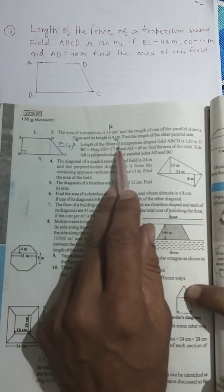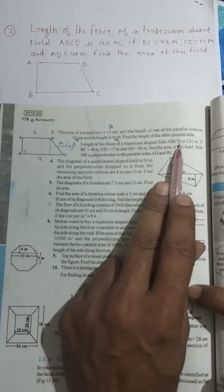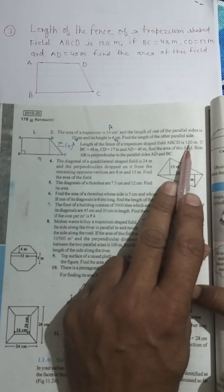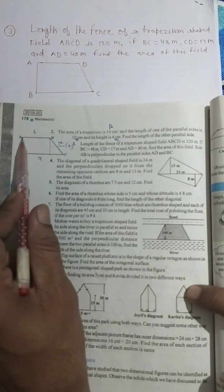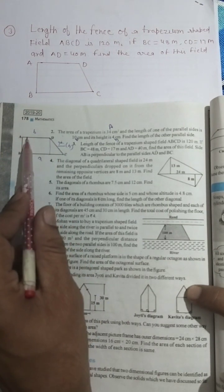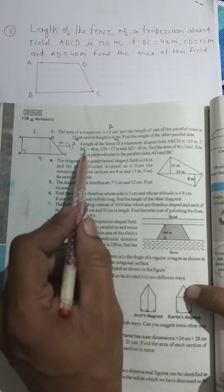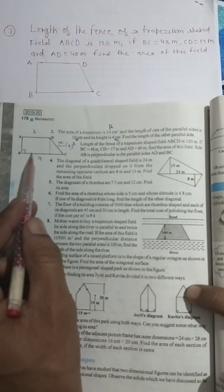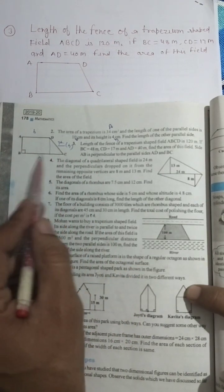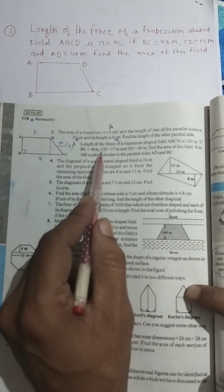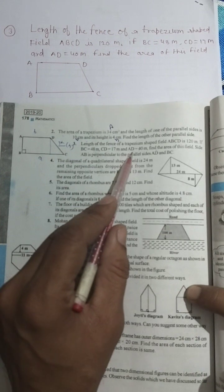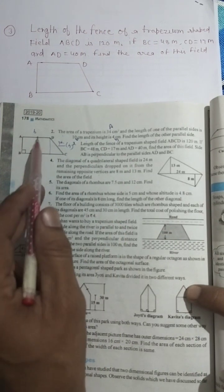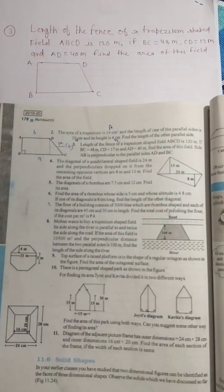Q3. Length of the fence of a trapezium-shaped field A, B, C, D is 120 meter. If BC is 48 meters, CD is 17 meters, and AD is 40 meter, find the area of this field.